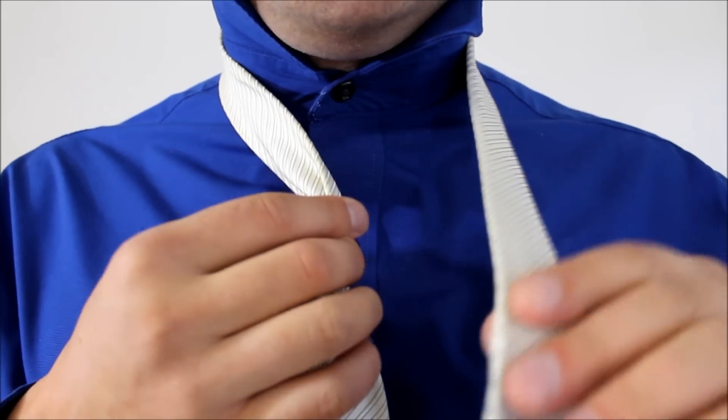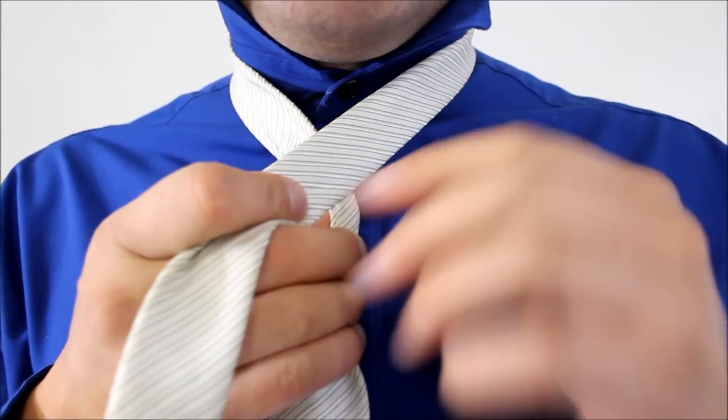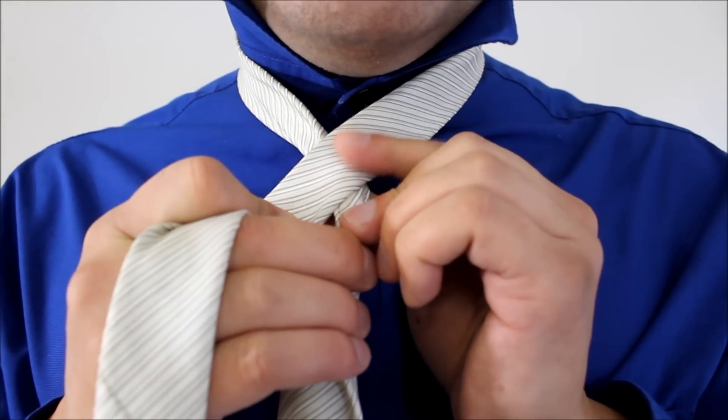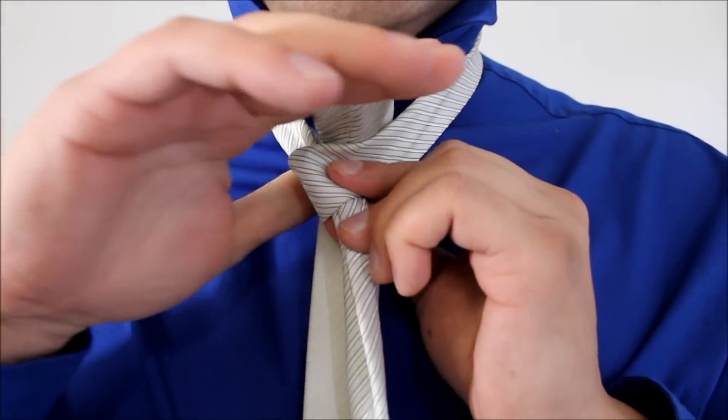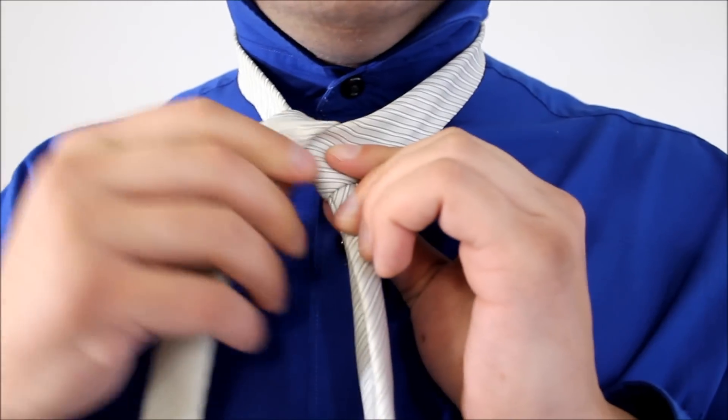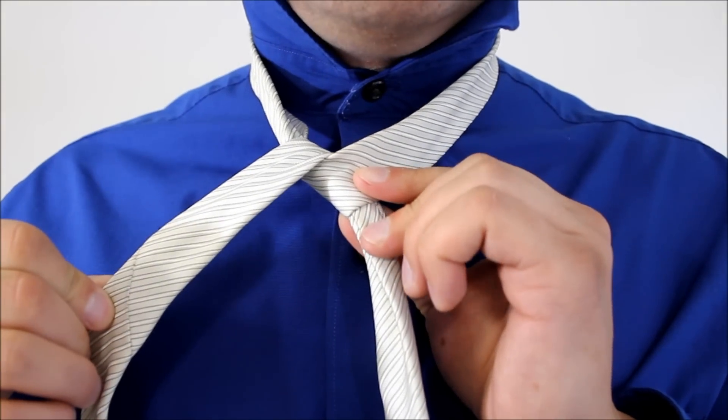Alright, so there's our inverted pinch. Taking the little end, we're going to cross it over, and we're going to feed it underneath our necktie knot, or our necktie hole, bring it back across like so.